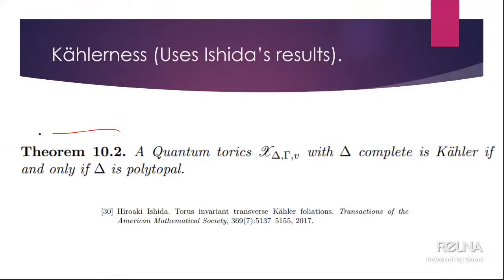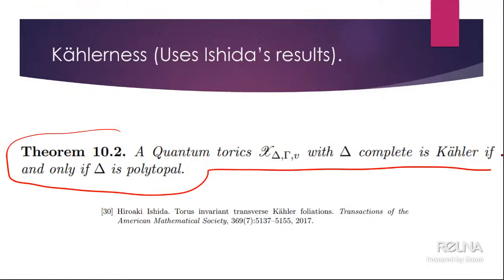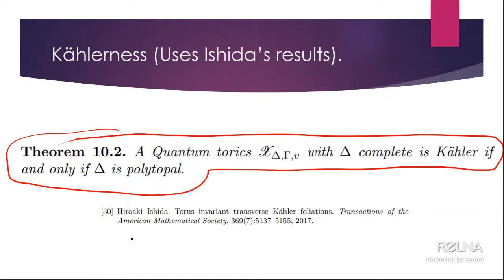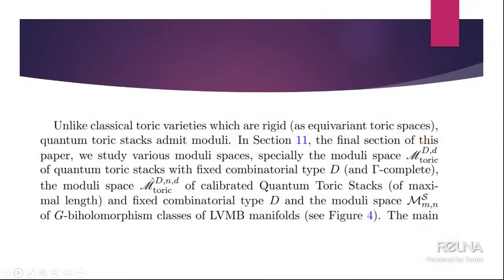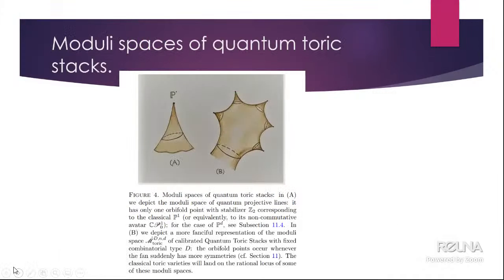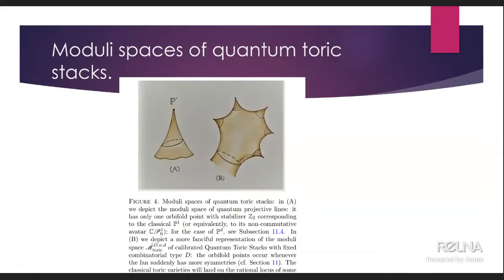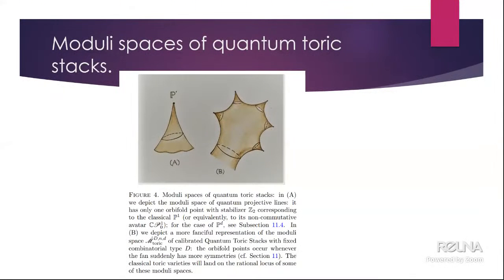One can show theorems like: a quantum toric variety is Kähler if and only if its fan is a polytope. So Kählerness and polytopality are the same thing. We use some results from Hiroaki Ishida. We managed to get the moduli space for the calibrated case — we fix the combinatorics, take some marked gerbe, and we can get the moduli space.